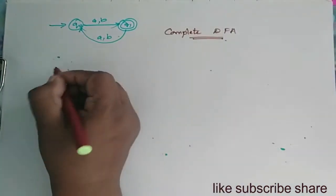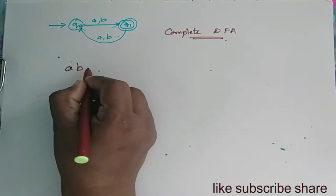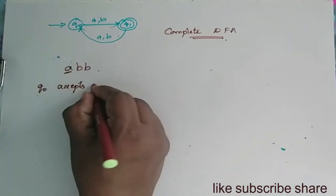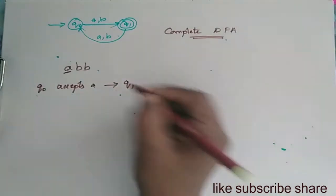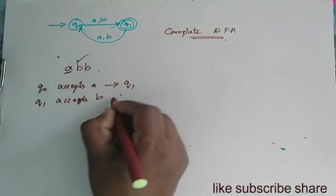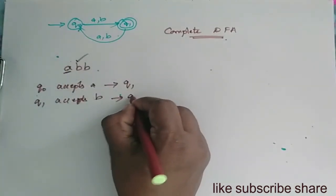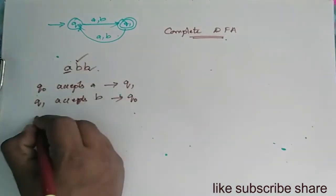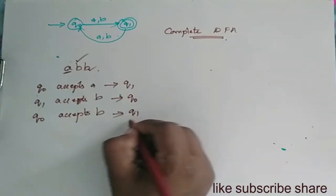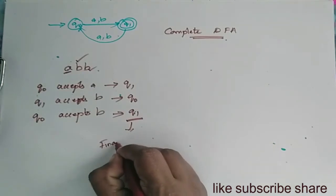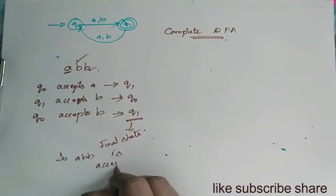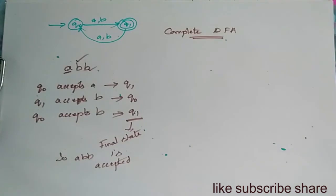Let us consider the example ABB. Q0 accepts A and moves to state Q1. At Q1, it accepts B and moves to state Q0. At Q0, it accepts B and moves to state Q1. Q1 is the final state, so the string ABB is accepted, since the string reaches the final state.